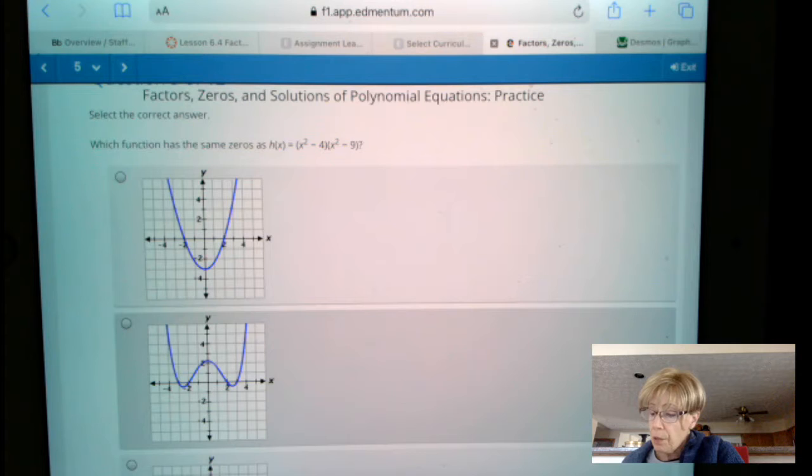So as we take a look at this next problem here, which function has the same zeros as h of x equals the quantity of x squared minus 4 times the quantity of x squared minus 9.